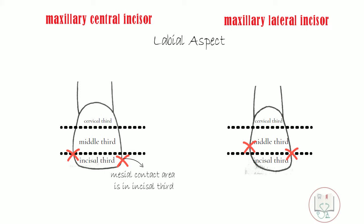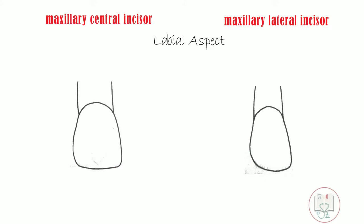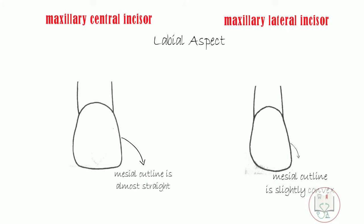Both contact areas of the lateral incisor are cervical to those of the central incisor. The mesial contact area in the central incisor is in the incisal third, and in the lateral incisor it is at the junction of the incisal and middle third. The distal contact area in the central incisor is at the junction of the incisal and middle third, whereas in the lateral incisor it is in the middle third. The mesial outline is straight in the central incisor and slightly convex in the lateral, whereas the distal outline is slightly convex in the central and even more convex in the lateral incisor.